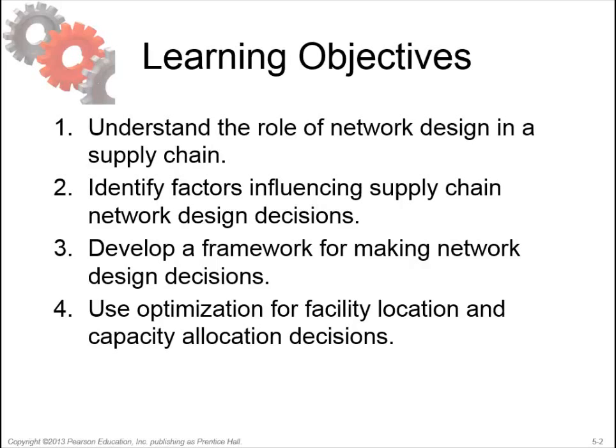The last learning objective — use optimization for facility location and capacity allocation decisions — is quite quantitative. Chapter 5 has been, for students in the Netherlands and last year for students in South Africa, quite a hard chapter. The hardest parts are in learning objective 4, the use of optimization for allocation decisions. But let's start easy.